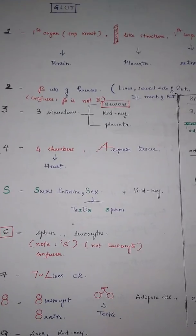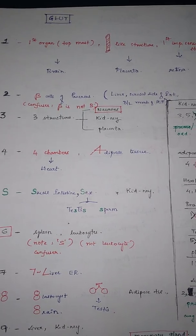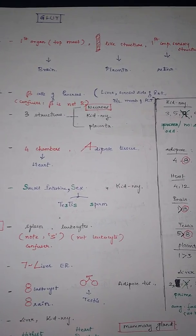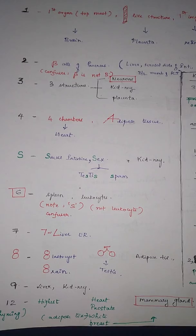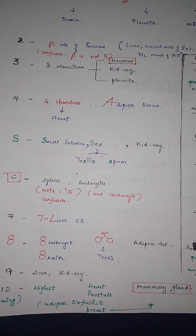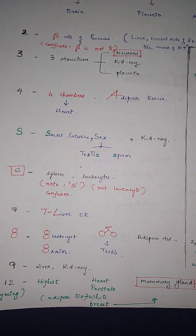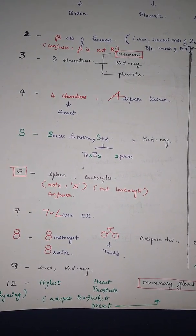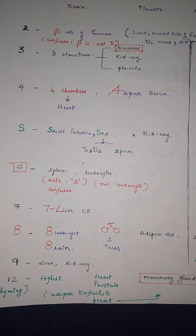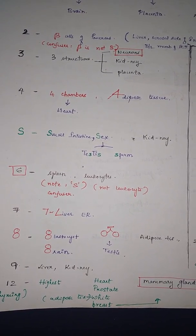So looking at the GLUTs again: one is the first organ, one leg structure, first important sensory structure; two, beta cells; three, three structures; four, four chambers; five, small intestine; six is by heart, spleen and leukocytes; seven is liver; eight is blastocyst and brain; nine, liver and kidney; 12 is the highest, that is the heart, prostate, white, and breast.